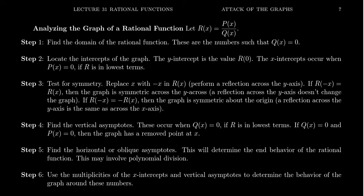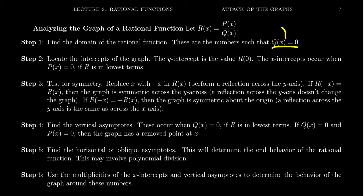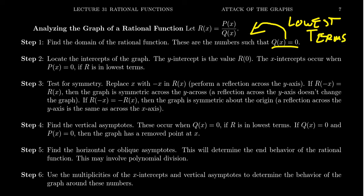Once you determine the domain, these are points to avoid on the graph. It's also important to find the intercepts. The y-intercept is usually pretty easy — just plug in x equals zero into the function. Assuming zero did not make the denominator go to zero, you'll have a y-intercept to plot. For x-intercepts, those are places that make the numerator go to zero. You should also simplify the fraction — put it into lowest terms — but only after you determine the domain. X-intercepts come from the numerator after putting it into lowest terms.